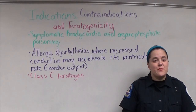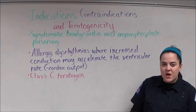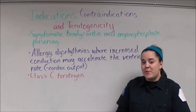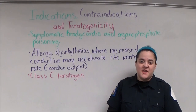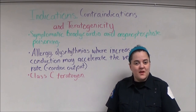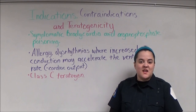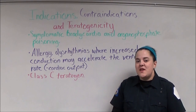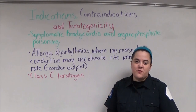Bradycardia can be either symptomatic or asymptomatic. Symptomatic bradycardia is one of the indications for atropine. The other indication is organophosphate poisoning, because atropine is the antidote. This video is going to focus on atropine in the setting of symptomatic bradycardia; atropine in the setting of organophosphate poisoning will be discussed in a future video.